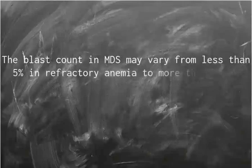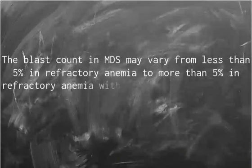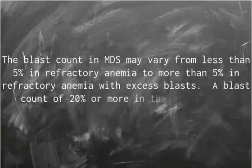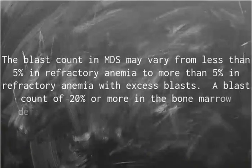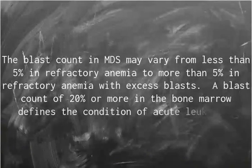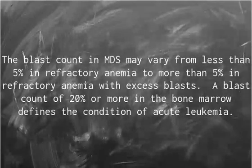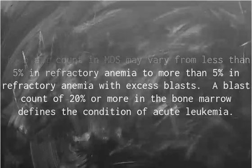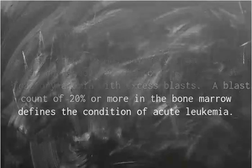The blast count in MDS may vary from less than 5% in refractory anemia to more than 5% in refractory anemia with excess blasts. A blast count of 20% or more in the bone marrow defines the condition of acute leukemia.